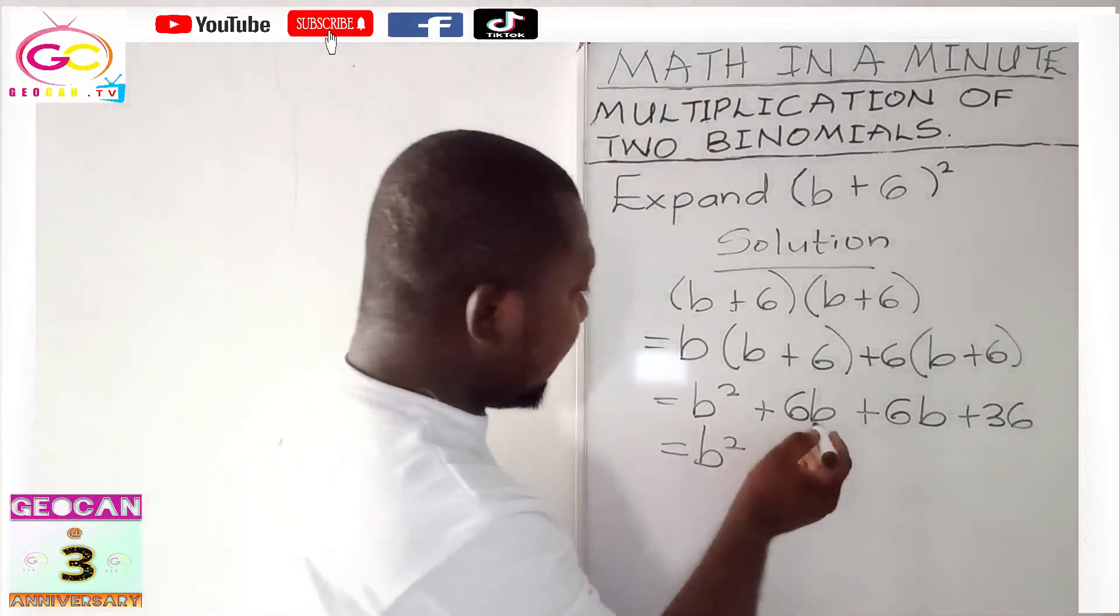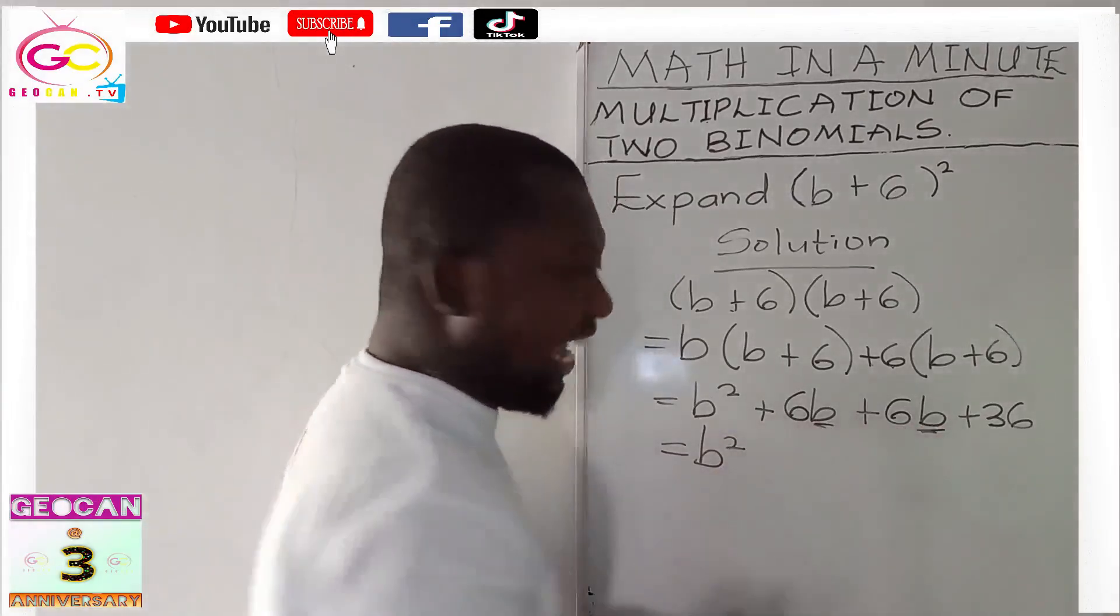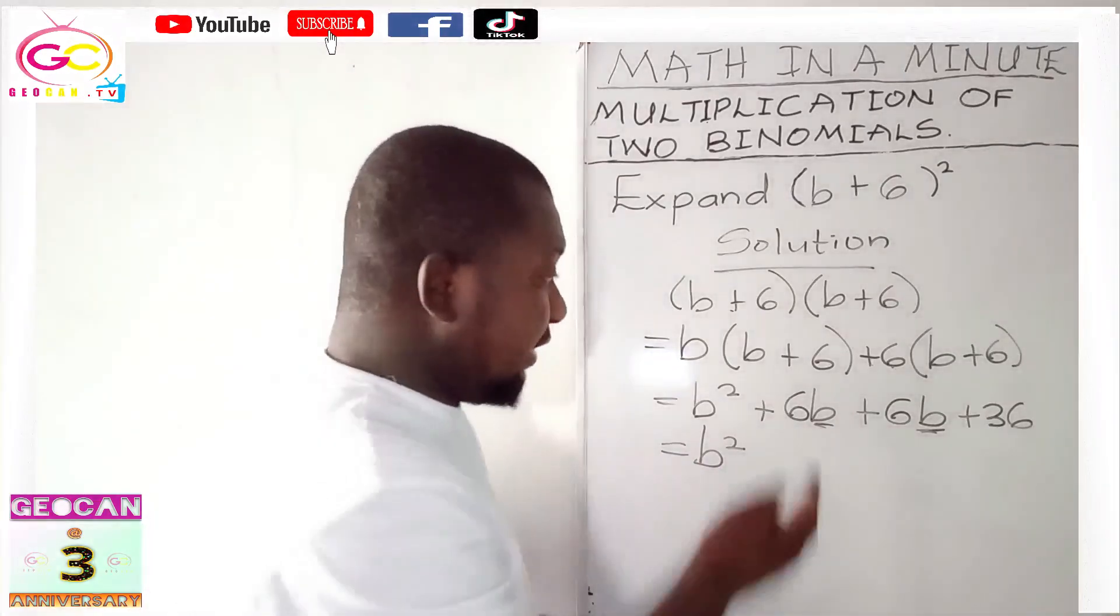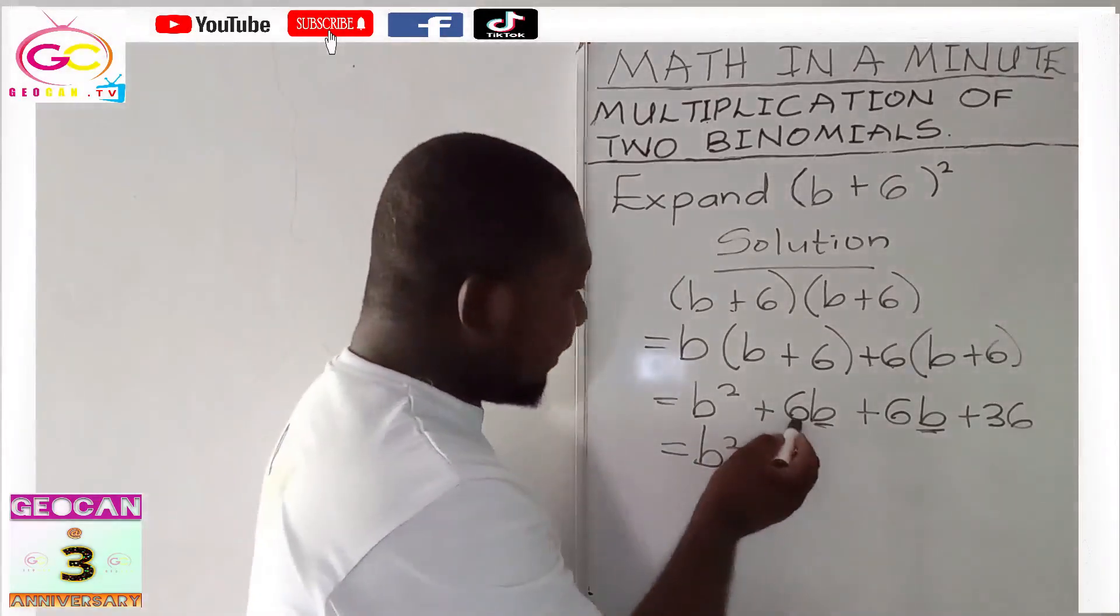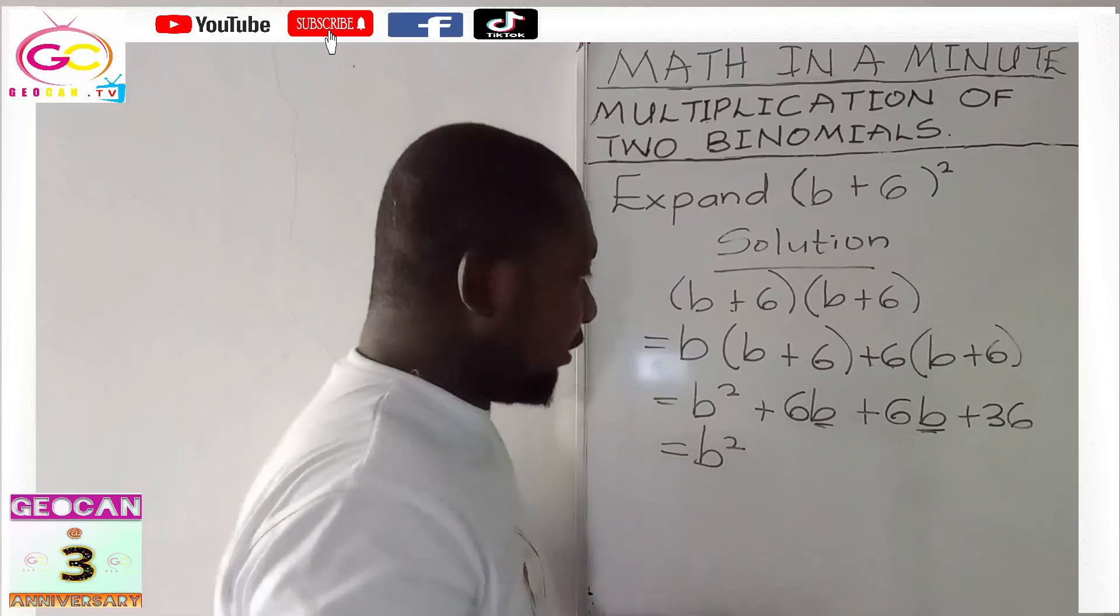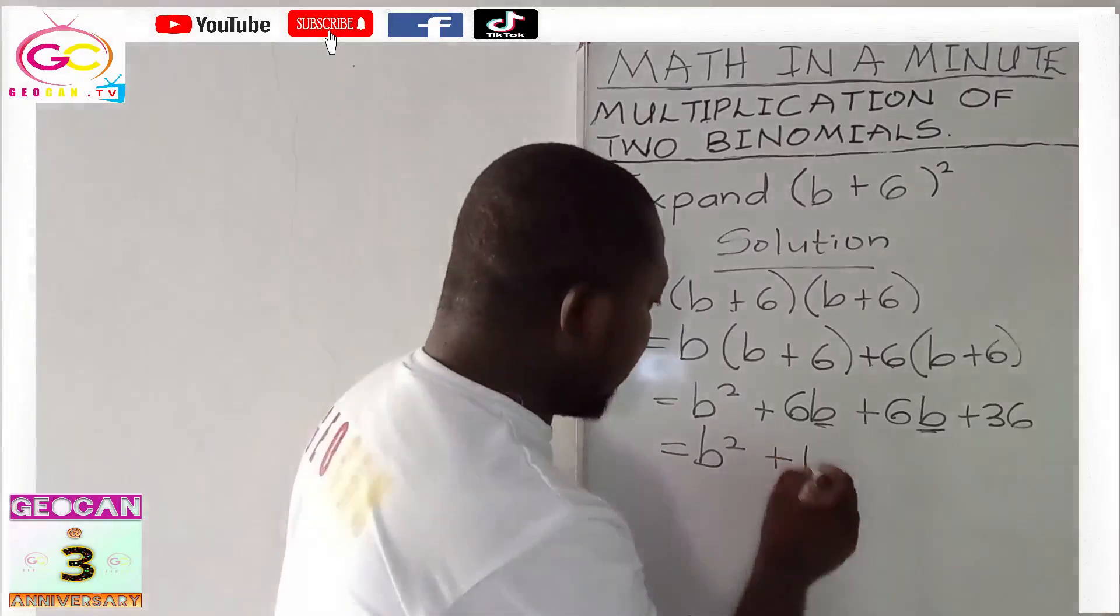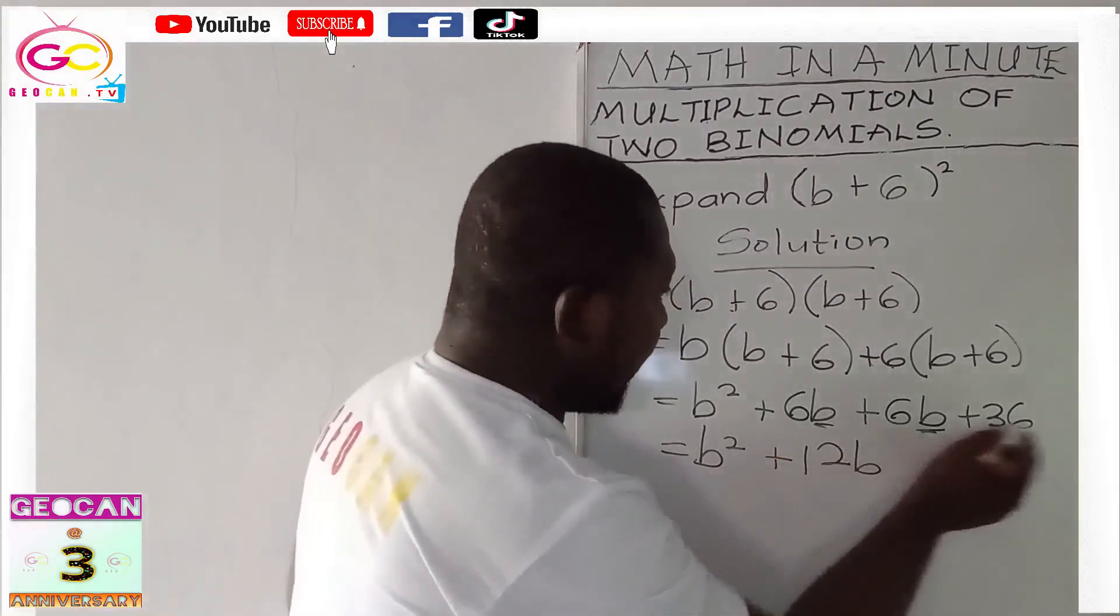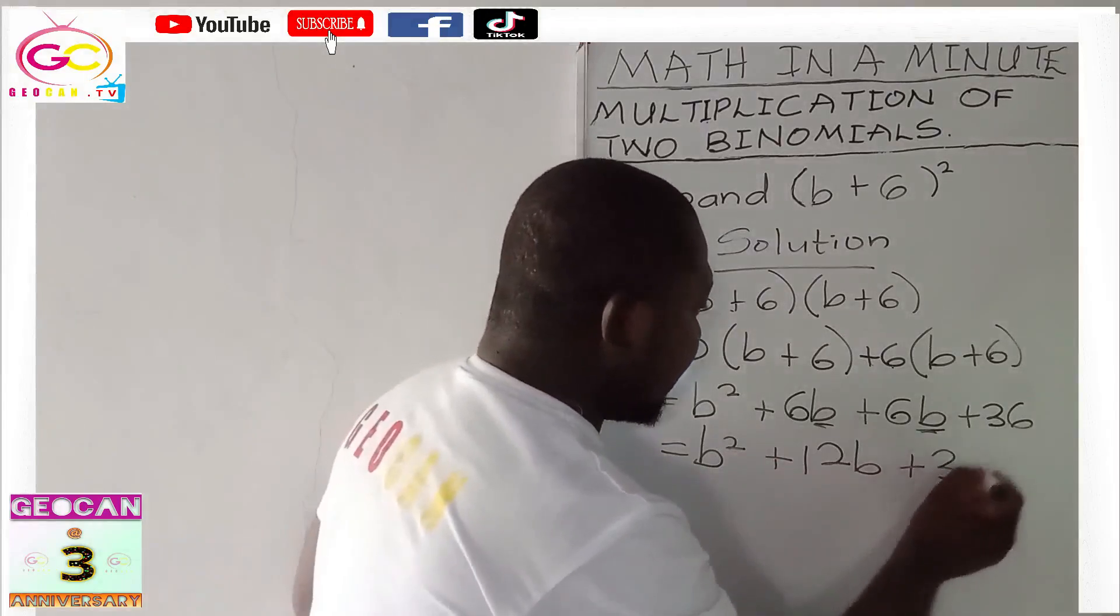Let's check whether we have like terms. Yes, 6b and 6b. These are like terms, so we can solve them together. So 6 plus 6, that's 6b plus 6b, which will give us positive 12b. Then you have plus 36.